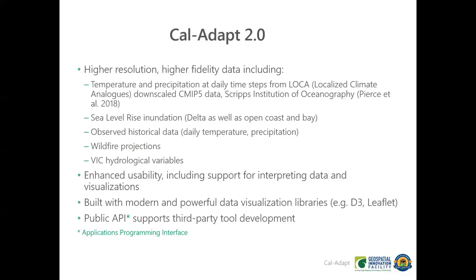Once we got that information, we started working on developing Cal ADAPT 2.0. This version is part of the fourth assessment and is designed to work with higher resolution and higher fidelity data. The original version used an older version of downscaled climate data, whereas what we have now on Cal ADAPT is the LOCA data set — statistically downscaled data from Scripps, with temperature and precipitation at daily time steps. We also have new data sets for sea level rise inundation, observed historical data, wildfire, and many other different variables.